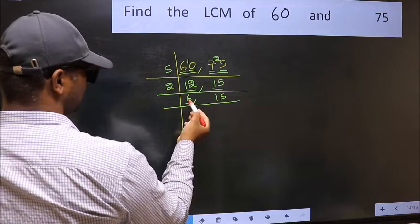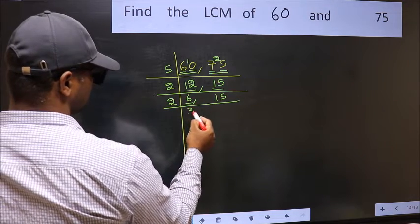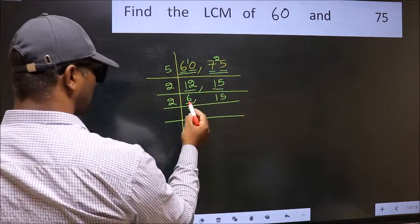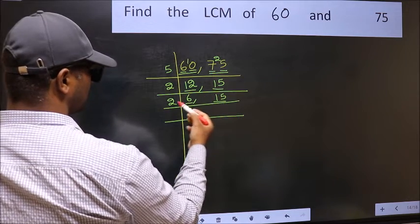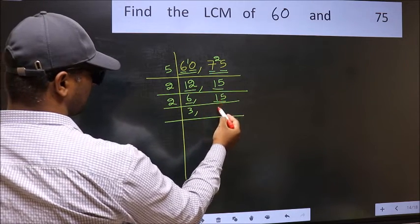Now here we have 6. 6 is 2 times 3 is 6. The other number 15 not divisible by 2 so you write it down as it is.